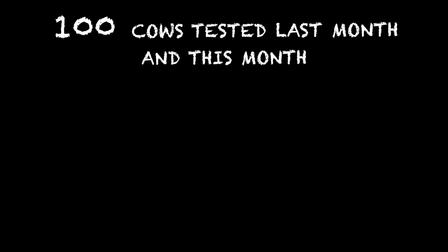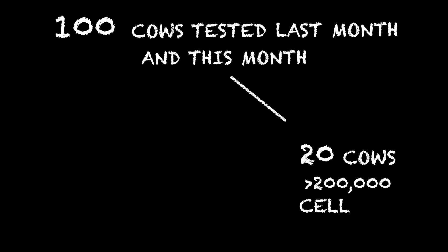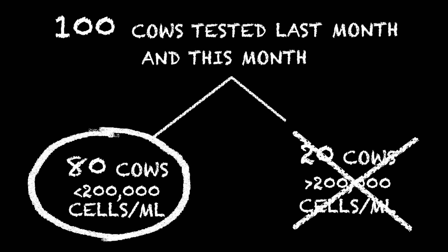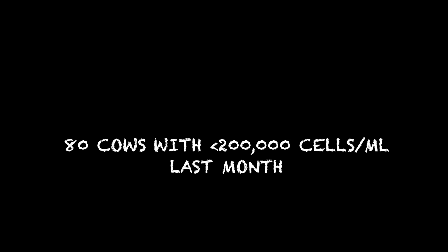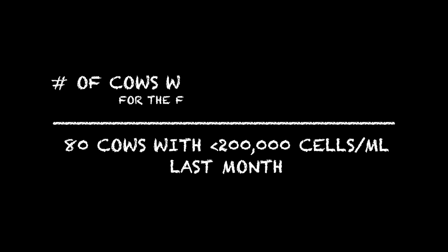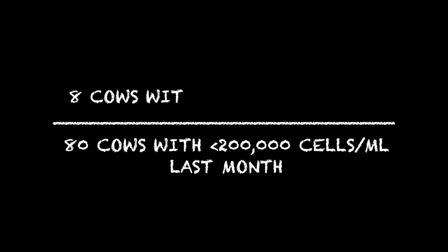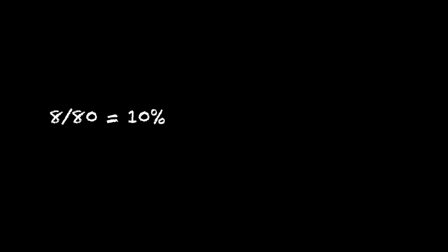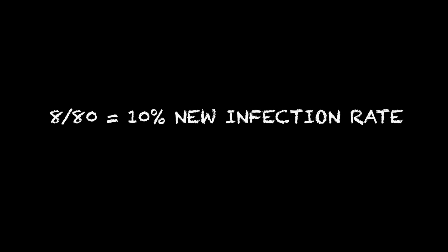Let's think about this with an example. Say we have 100 cows tested last month and this month. Of those 100 cows, last month 20 of them were already high — those cows aren't eligible for either the numerator or denominator. Only healthy cows can be included. So the denominator would be 80 cows that were healthy last month. The new infection rate is simply: of those 80 cows below 200,000 last month, how many are over 200,000 this month? If there were 8, that's 8 out of 80 — a 10% new infection rate.